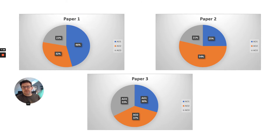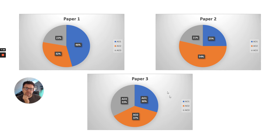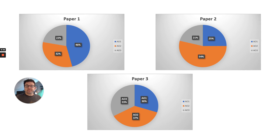To compare: paper 1 has a lot more AO1, paper 2 has a big emphasis on AO2, and paper 3 is a mix of them all. That's the makeup of your exams in A-level biology. I'll shortly be doing an exam technique video for A-level biology, so hopefully you'll find that useful. See you soon.